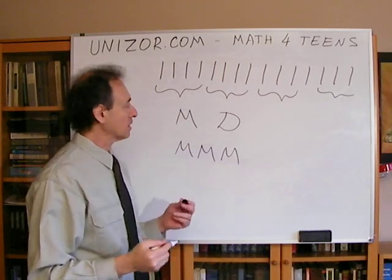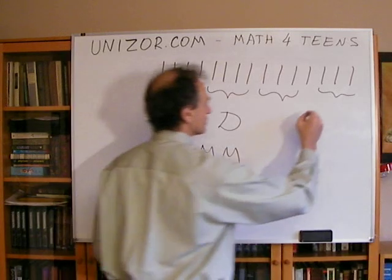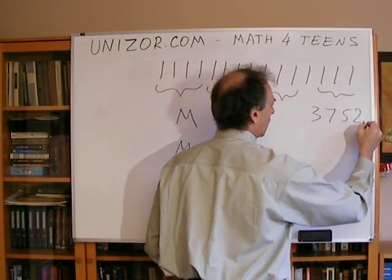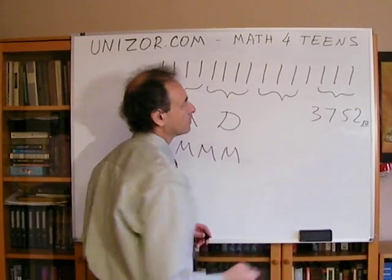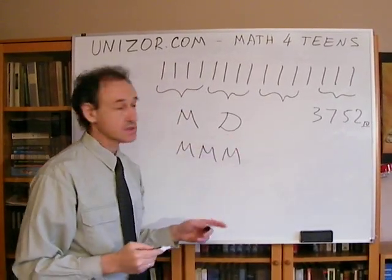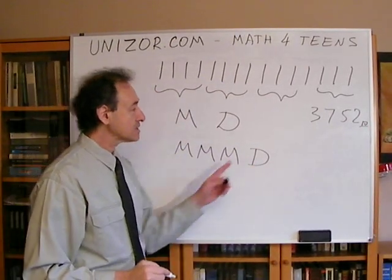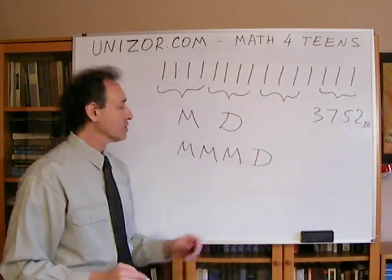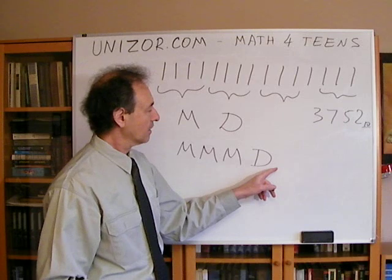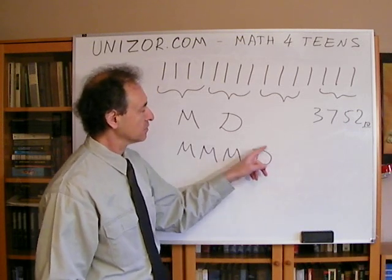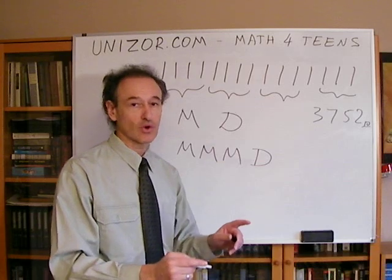Romans were much smarter. They decided the remainder, which is a number from 0 to 999, we will also group into different groups. We will group it in groups of 500, and they invented a different character, a different symbol for 500, which is D. So if you have a number, let's say 3,752 in our decimal system, 700 can be represented as one full group of 500, and then you still have 252 in the remainder.